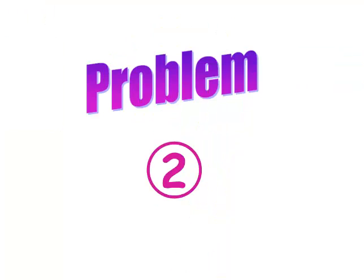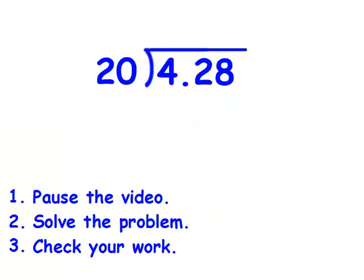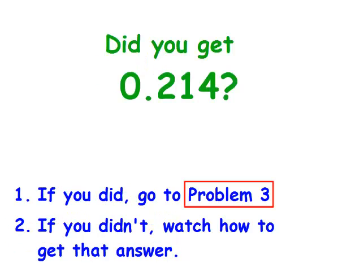Here's problem number two. I want you to write this problem on your communicator and see if you can solve it. If you've got it right, go to problem three. If you don't, we'll do the problem together. Go ahead and pause your video now. Did you get two hundred and fourteen thousandths? If you did, move on to problem three. If you didn't, let's do this problem together.